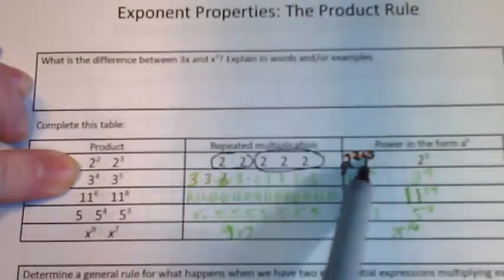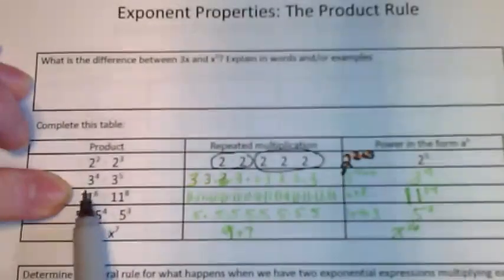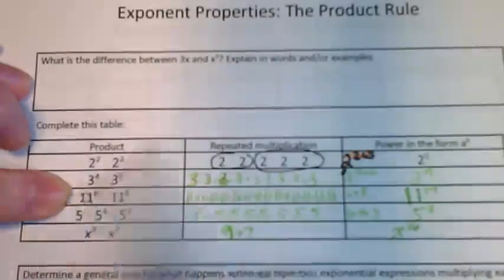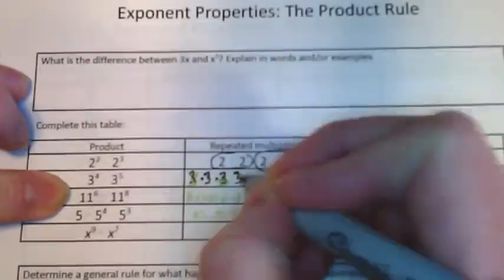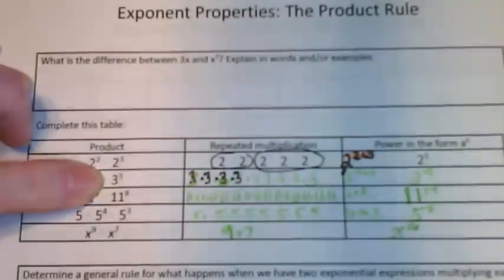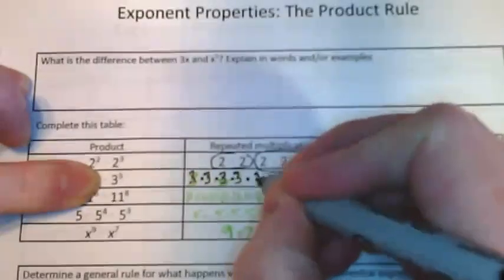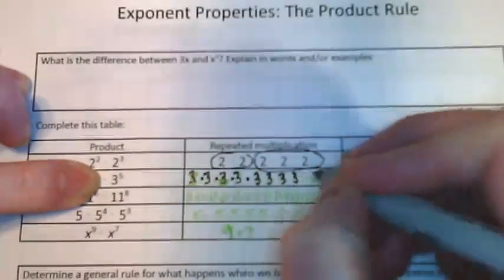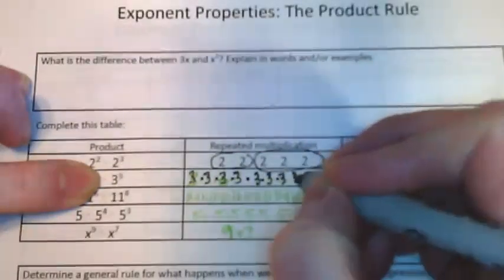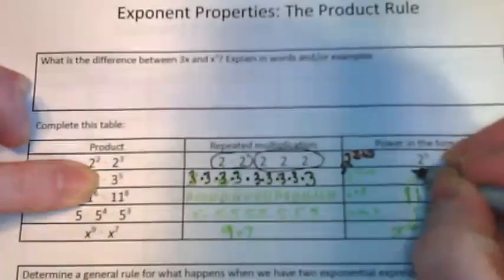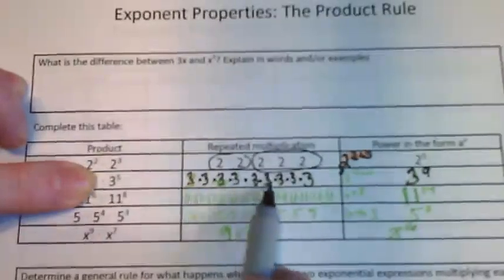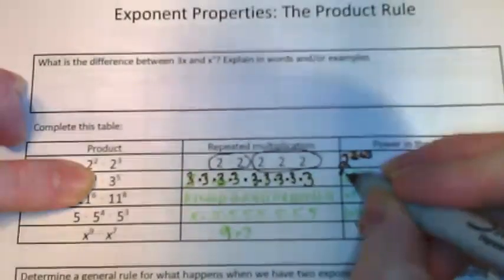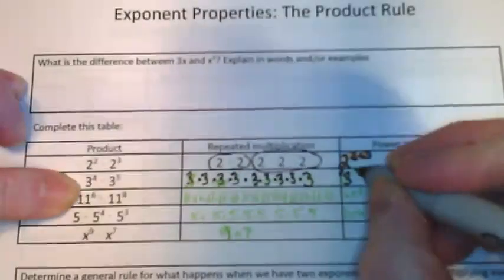Let's do it again with this example. 3 to the fourth power, so 4 threes separated by multiplication signs, and 3 to the fifth power, so times 1, 2, 3, 4, 5, we have 5 more of them. And this ends up being 3 to the ninth power because there's 1, 2, 3, 4, 5, 6, 7, 8, 9. Or a simpler way to do this would be to say 3 to the 4 plus 5 gives us 9.